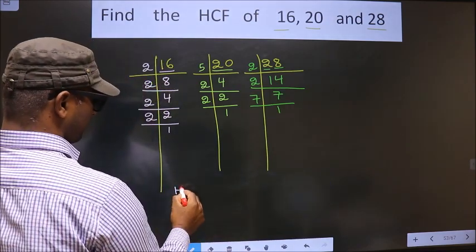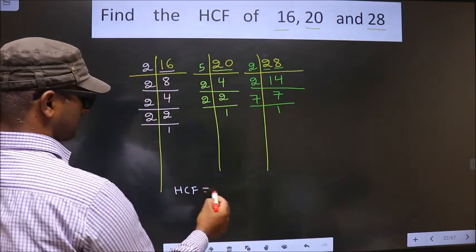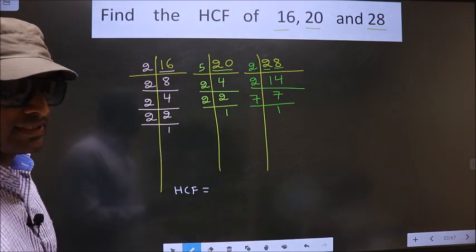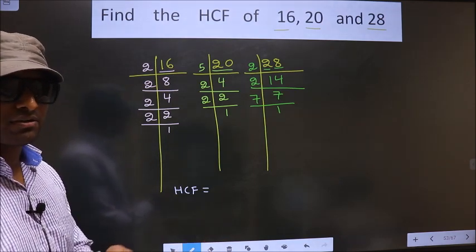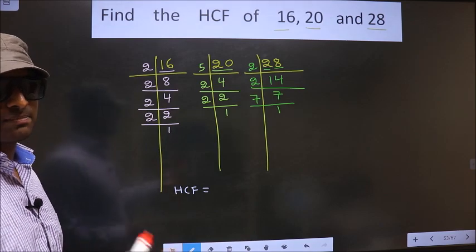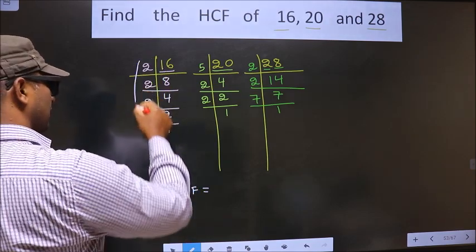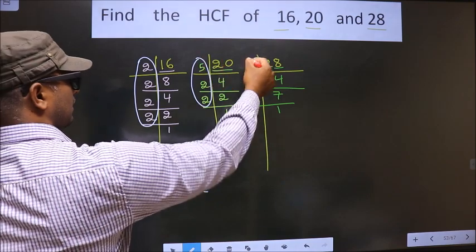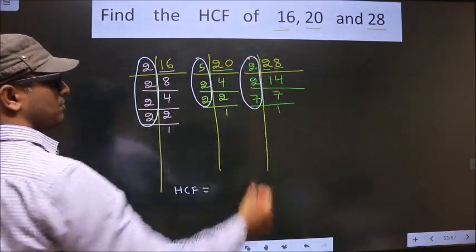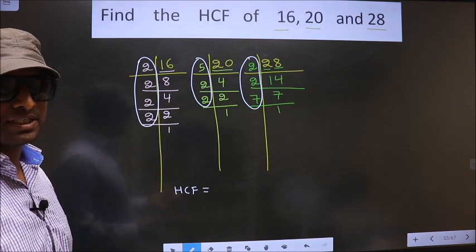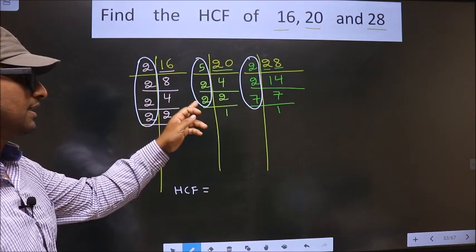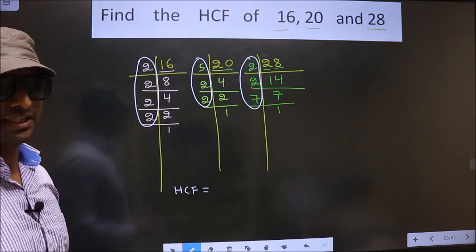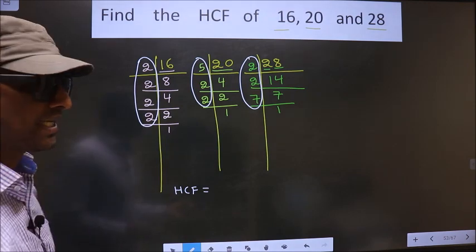So now our HCF is, HCF is the product of numbers that are present here and here and also here. So now we should find the numbers that are present here, here, and also here.